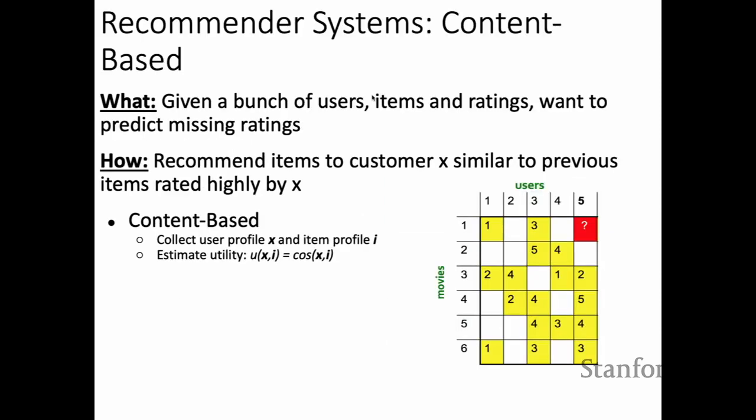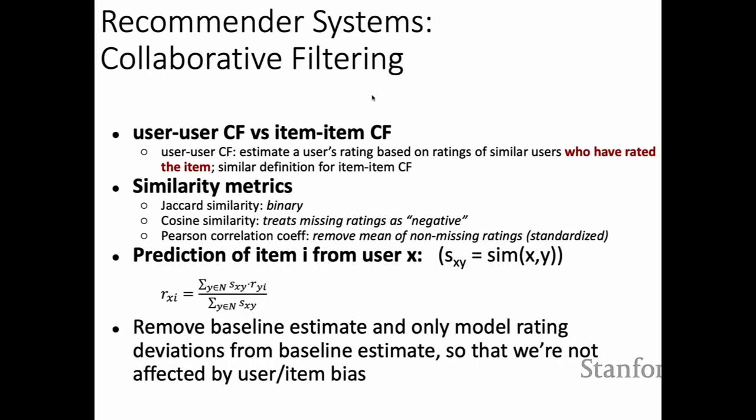For recommender systems, the first kind we saw was content-based recommender systems. You are given a matrix of users, items, and their ratings, and want to predict missing ratings. In content-based systems, you recommend items similar to what the customer has rated highly, by doing feature engineering to build a user profile and estimating similarity using cosine similarity. The next approach was collaborative filtering, of two types: user-user and item-item. User-user collaborative filtering gives the rating a user might give based on similar users who rated the same item.